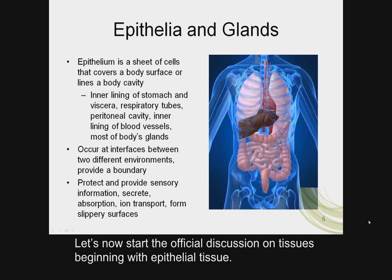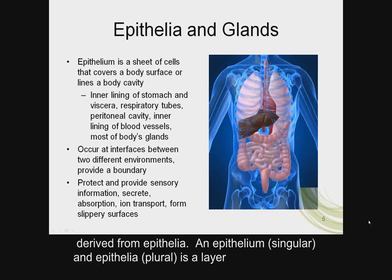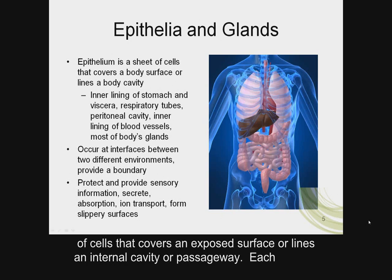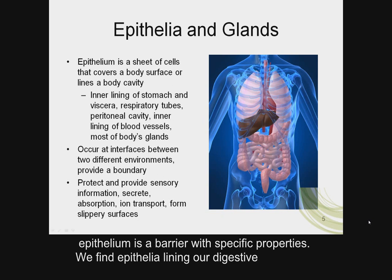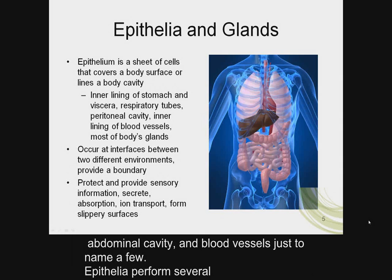Let's now start the official discussion on tissues, beginning with epithelial tissue. Epithelial tissue includes epithelia and glands. Glands are secretory structures derived from epithelia. An epithelium is a layer of cells that covers an exposed surface or lines an internal cavity or passageway. Each epithelium is a barrier with specific properties. We find epithelia lining our digestive tract, respiratory system, reproductive system, urinary tracts, chest cavities, abdominal cavity, and blood vessels, just to name a few.